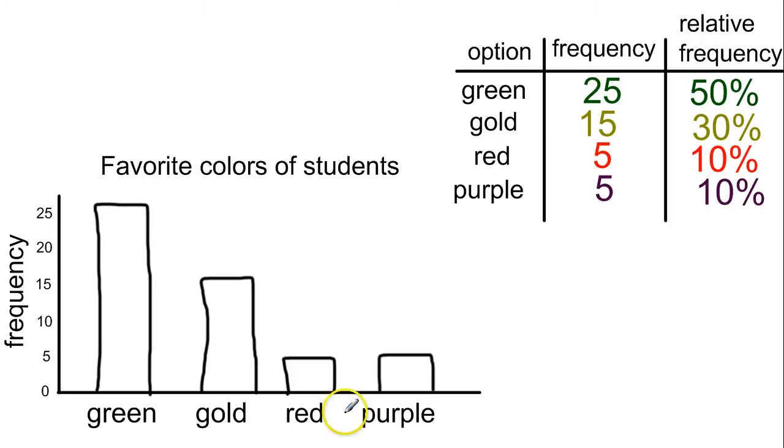So this would be a bar graph. And when you look at this, you see, oh, the green bar is a lot taller than all the other ones. That's the most common option. The gold one, medium height, pretty common. And then this red and purple are both equal and not very common. So very quickly from a bar graph, you can see that.